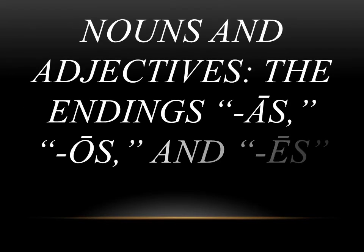The grammar for this chapter is going back to nouns and adjectives, and we're going to be looking at the endings -as, -os, and -es. These have to do with direct objects, and these three endings are their plural forms.